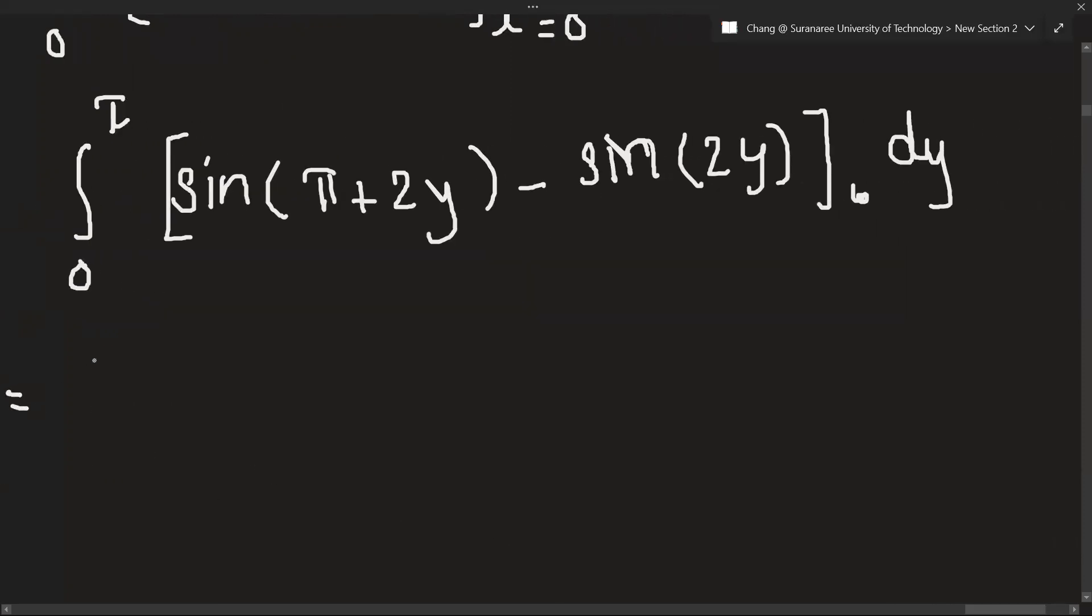Okay, so when we integrate sin, you will get minus cos pi plus 2y. You just simply divide with the coefficient of y here, so 2.